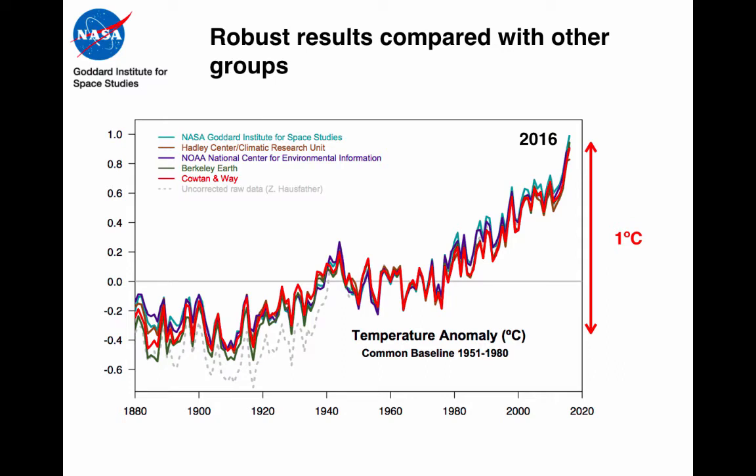That's not just true with respect to the versions that GISS has put together, but also with estimates put together by other groups. Here I show the work done by the Hadley Centre and Climate Research Unit in the UK, and the NOAA National Centre for Environmental Information in the US. And then two independent efforts, Berkeley Earth and Cowtan and Way, which try and deal independently with issues of homogenisation and interpolation in data poor areas. All of these trends are very well matched.